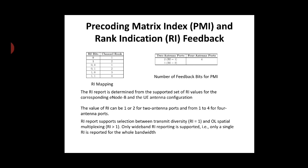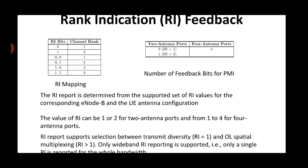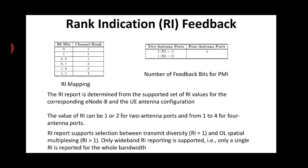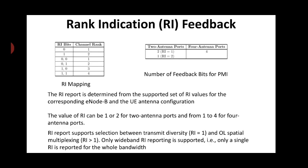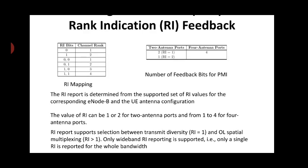The mapping between RI bits and the channel rank is shown here. The value 0 is mapped to rank 1, 1 is mapped to rank 2, 0,0 to 1, 0,1 to 2, 1,0 to 3, and 1,1 to 4. This bit mapping is used to report RI for both closed loop (CL) and open loop (OL) MIMO modes.